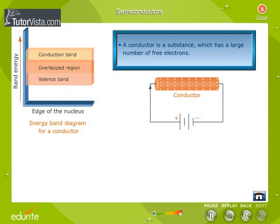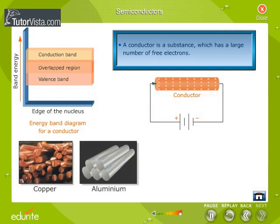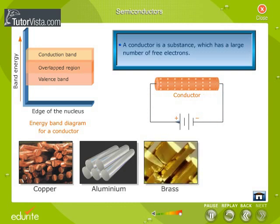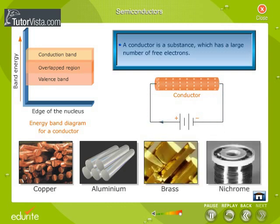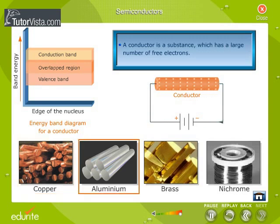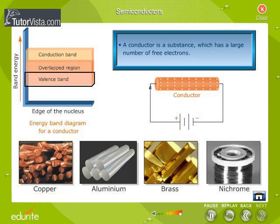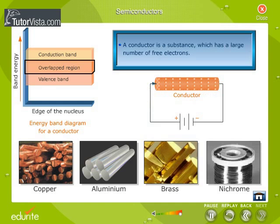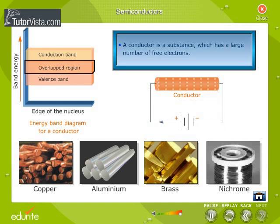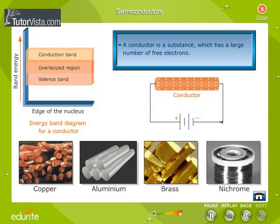For example, copper, aluminium, brass, nichrome and all metals are conductors. In fact, in metals like copper and aluminium, the valence band and the conduction band overlap in such a way that there is no forbidden gap. Thus a slight potential difference across a conductor results in the movement of free electrons.